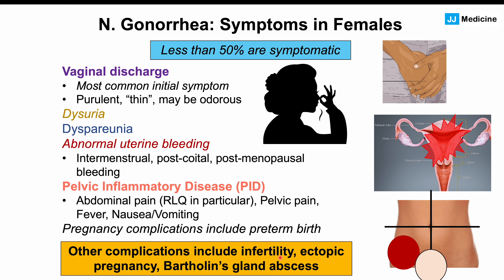Ectopic pregnancy — implantation of the embryo outside the uterus, such as in the fallopian tubes — is more likely to occur in infected patients. Bartholin's gland abscesses are also a possible complication.